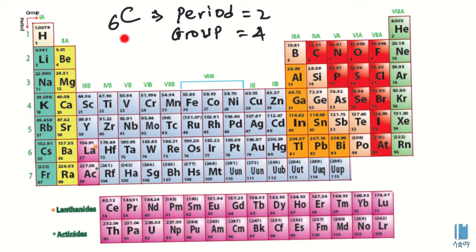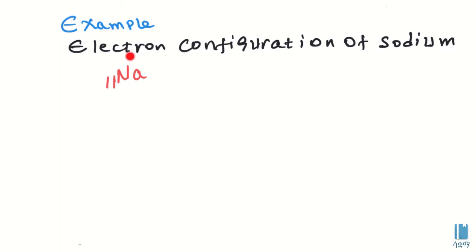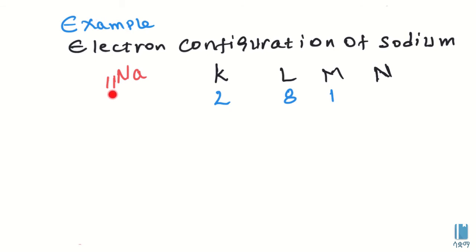From the electron configuration, you can identify the atomic orbital and atomic number of an element. The atomic number identifies the element. If you want to find the element, use its atomic number, which gives you the number of electrons.